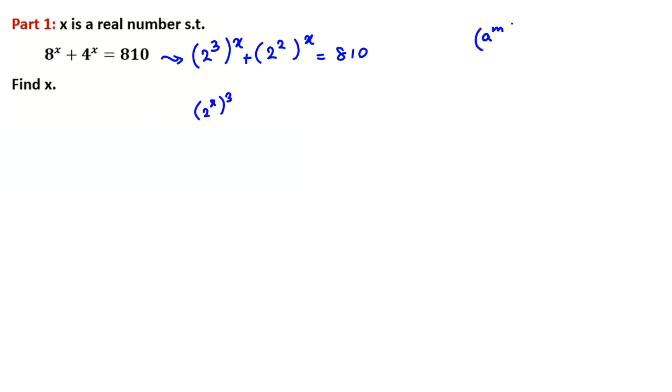Because we know a to the m to the n equals a to the mn. You can write it also as a to the n to the m. 2 to the x to the 3 plus 2 to the x squared equals 810. Then we can consider a equals 2 to the x.